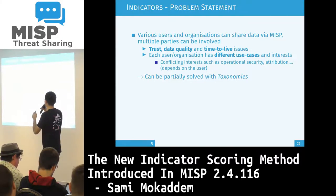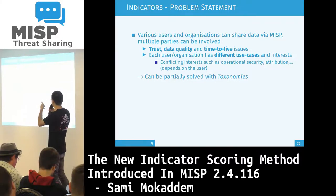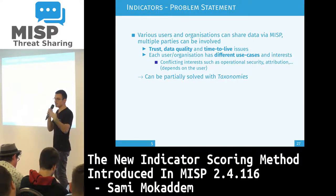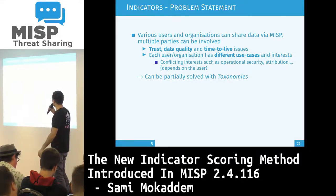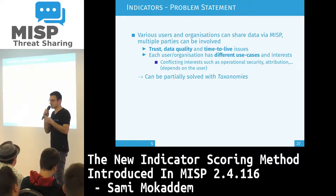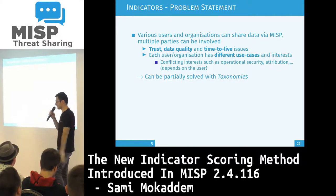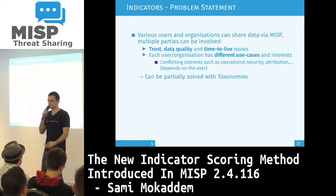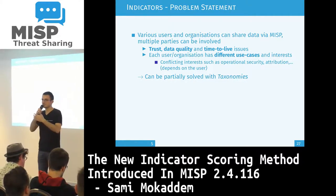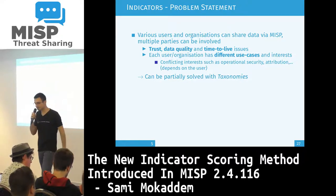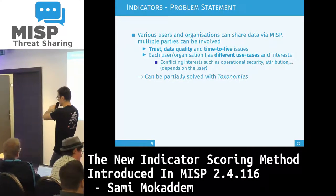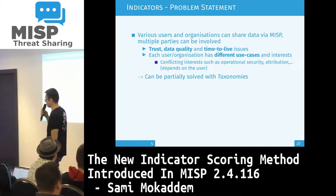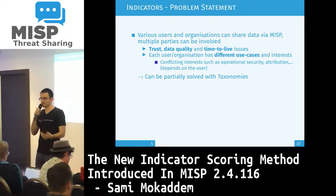If you are doing operational security like blocking IOCs, you only want actionable data that are true IOCs. While if you are doing some research, for example, you are interested in everything, even false positives. And this is, in our model, more or less solved with the help of taxonomies.